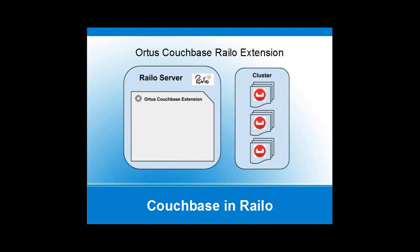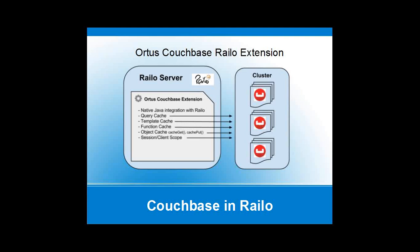The third way to tie Couchbase into ColdFusion — and I will be doing demos for this — is with our Couchbase Rilo extension. This is a commercial product with native Java integration with Rilo. We wrote this extension in Java, and it registers a new cache type of Couchbase. This means you can store your query cache automatically in your Couchbase cluster, your template cache, your function cache. Function cache is a cool thing Rilo does that Adobe doesn't yet — you add cache parameters like queries but in a function, and the results are cached. The built-in cache get and cache put functions in Rilo can also be repointed at Couchbase.